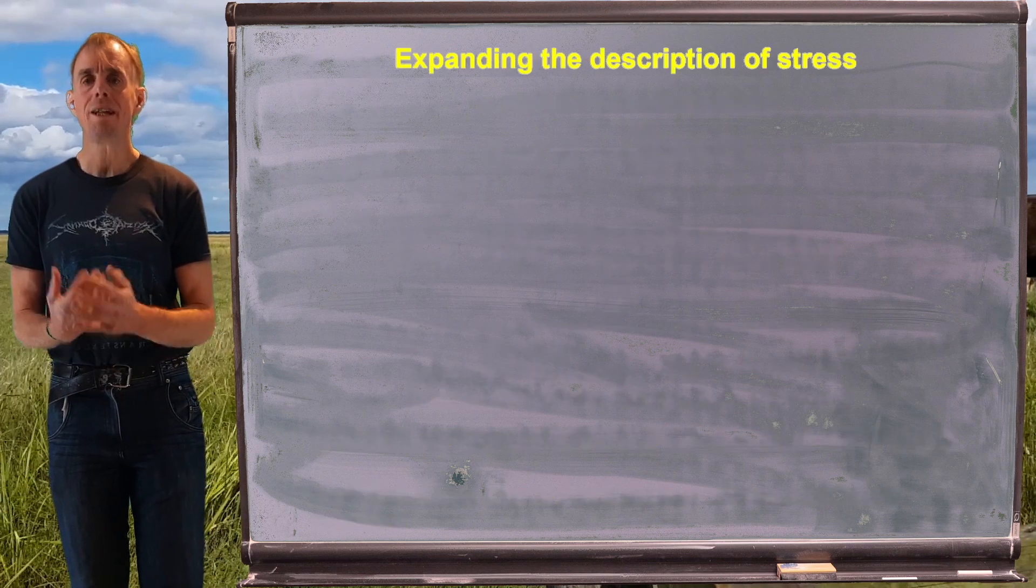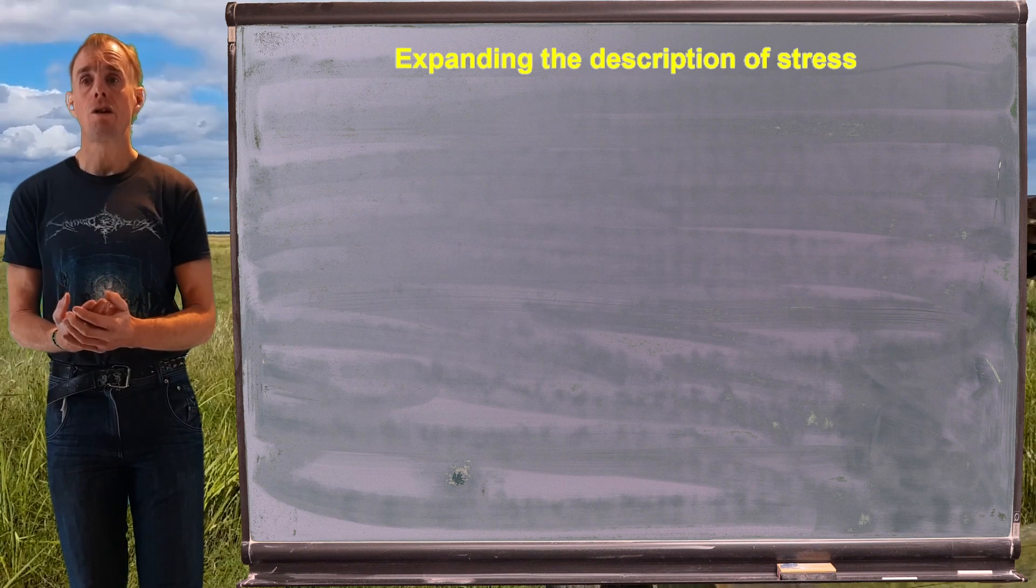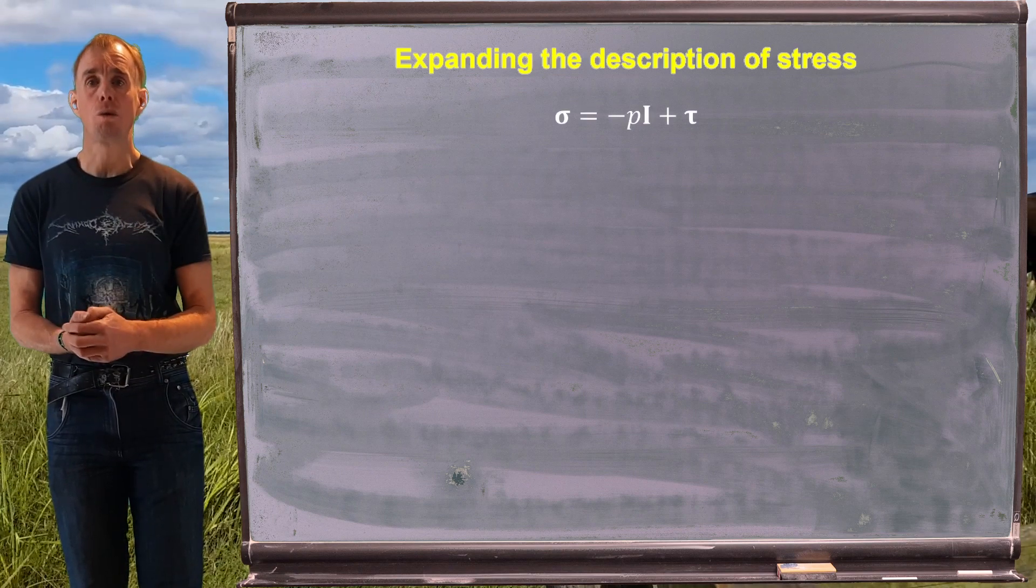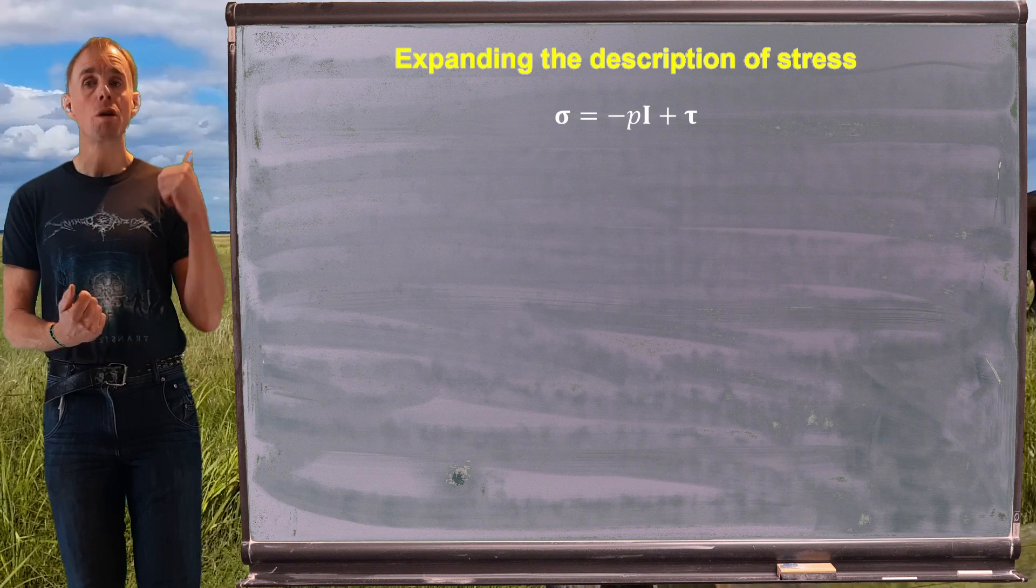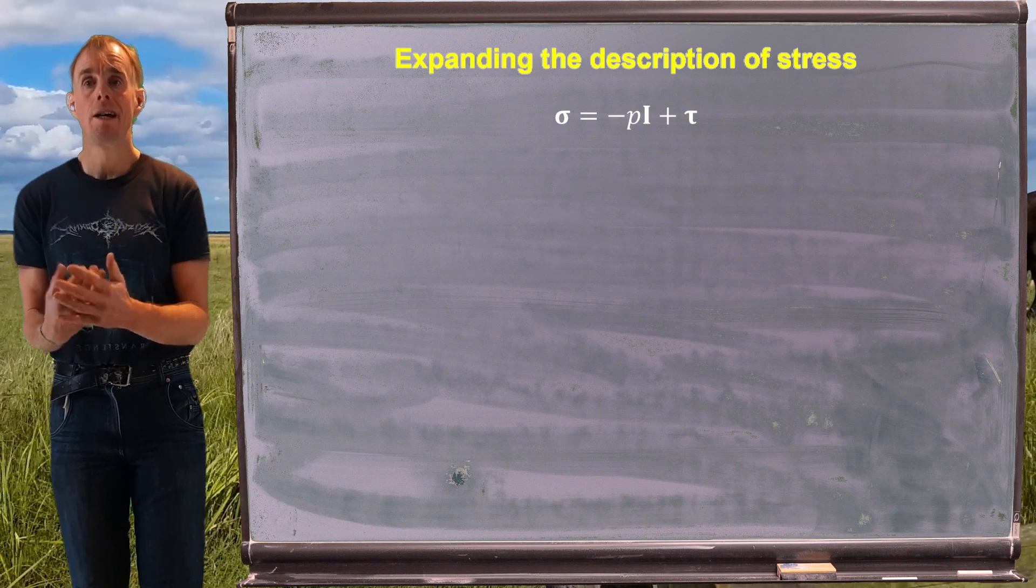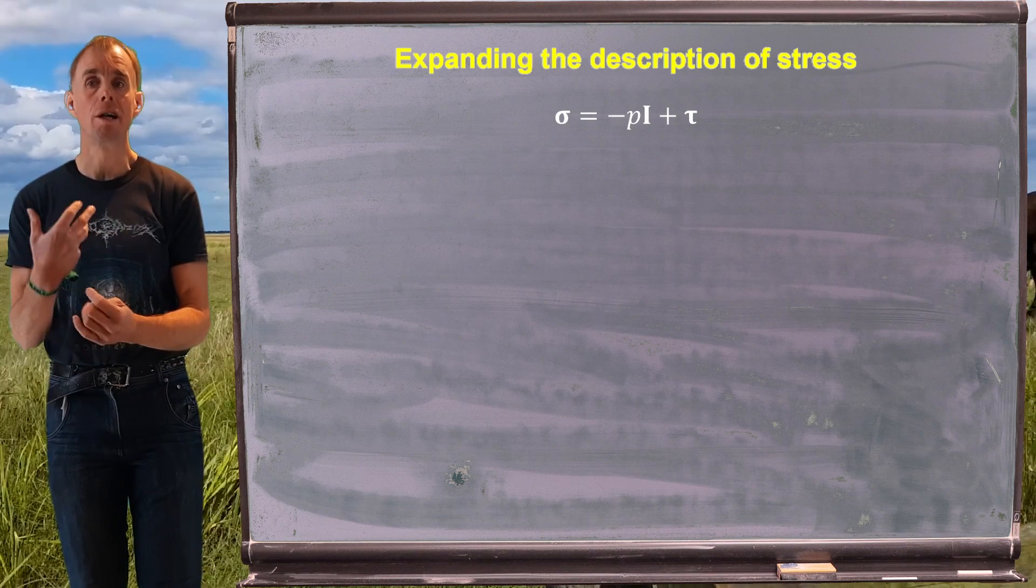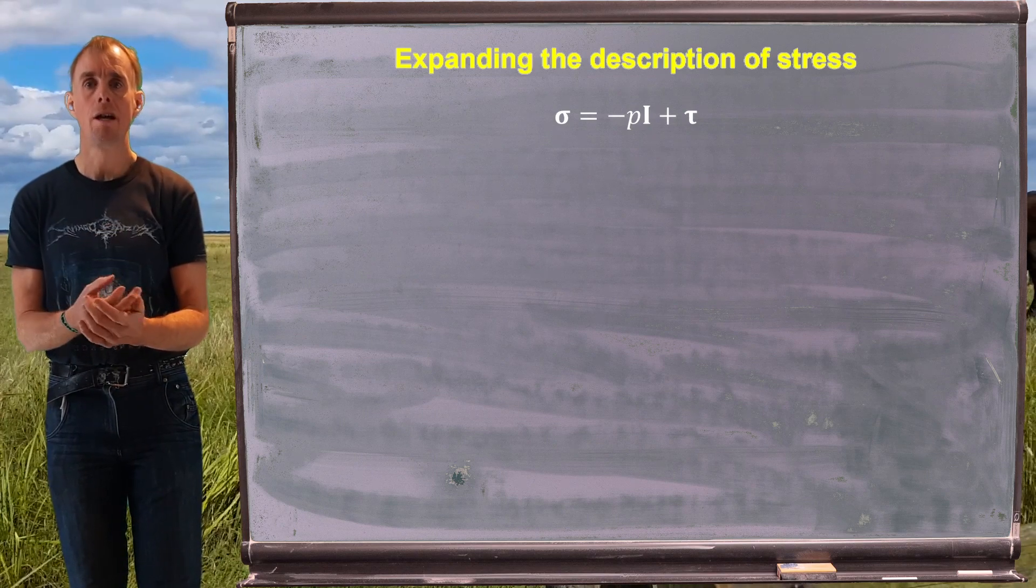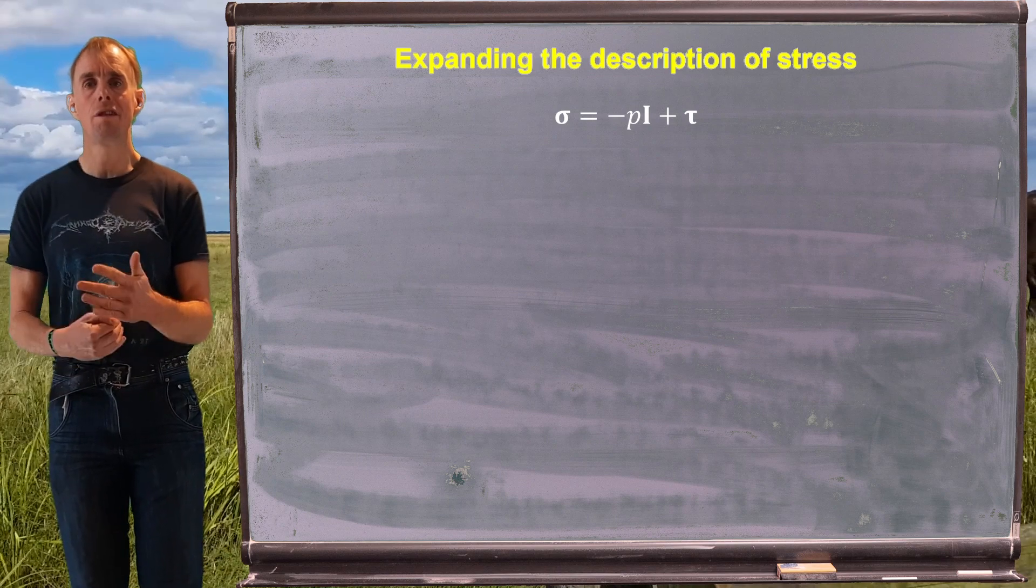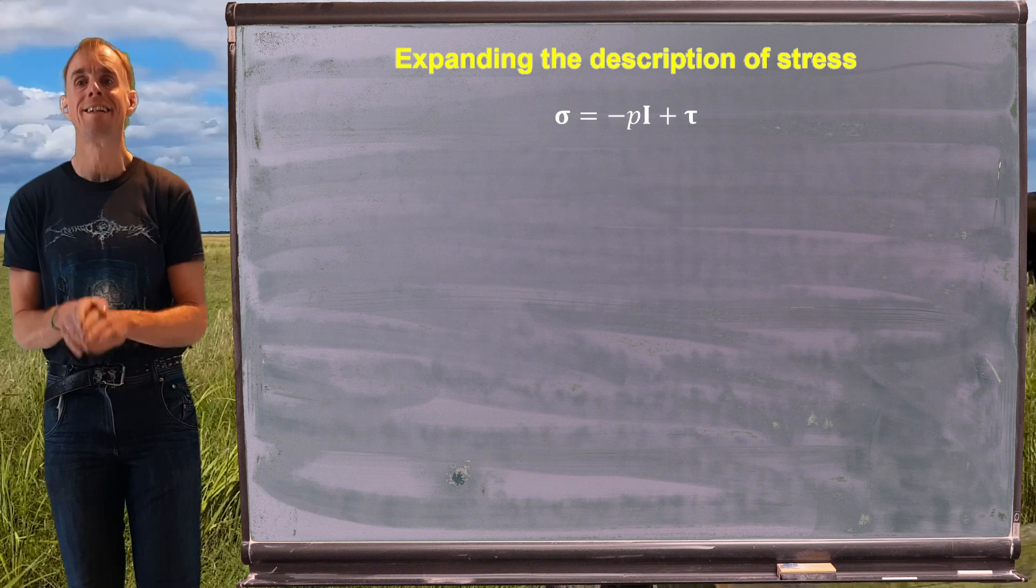So let's start by thinking about stress. So in previous parts of this course, in lesson three, for example, we wrote this statement down here, that the total stress in a fluid is equal to a hydrostatic component plus a dynamic component, sigma equals minus pI plus tau. We made that statement and we didn't really explain it in any detail. So I'm going to take the time to explain it here.